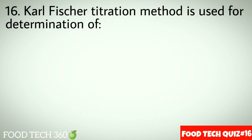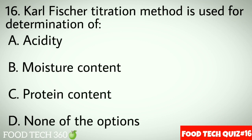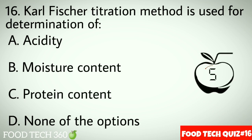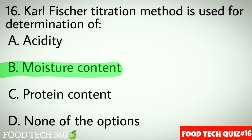Question No.16: Carl Fischer titration method is used for determination of — Options A: Acidity. B: Moisture content. C: Protein content. D: None of the options. Correct answer B: Moisture content.